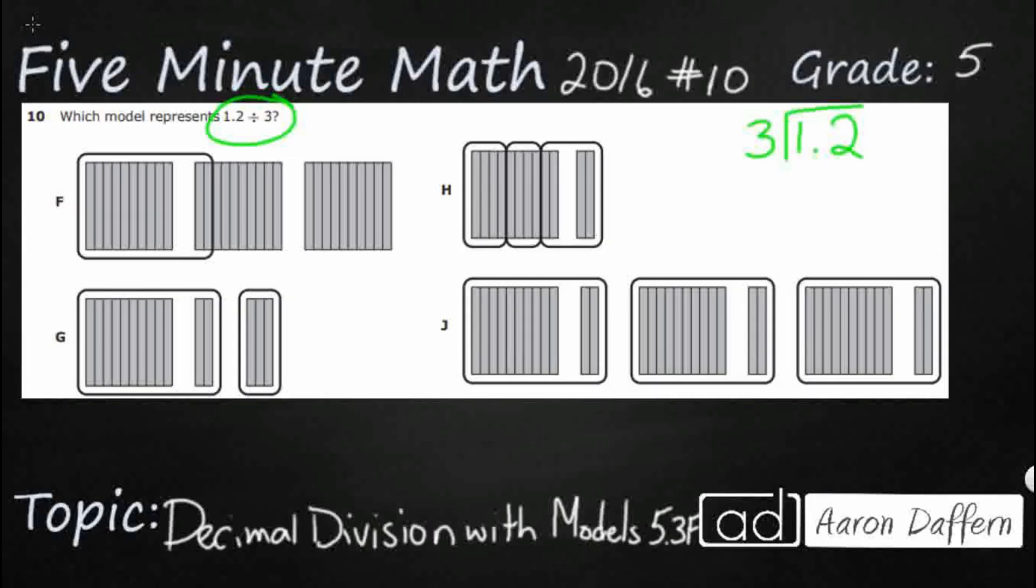F looks like they actually have it flipped, because take a look at this: this is one whole right here, this is two wholes right here, this is three wholes. And I know those are wholes just because I've got 1, 2, 3, 4, 5, 6, 7, 8, 9, 10 inside each of those.